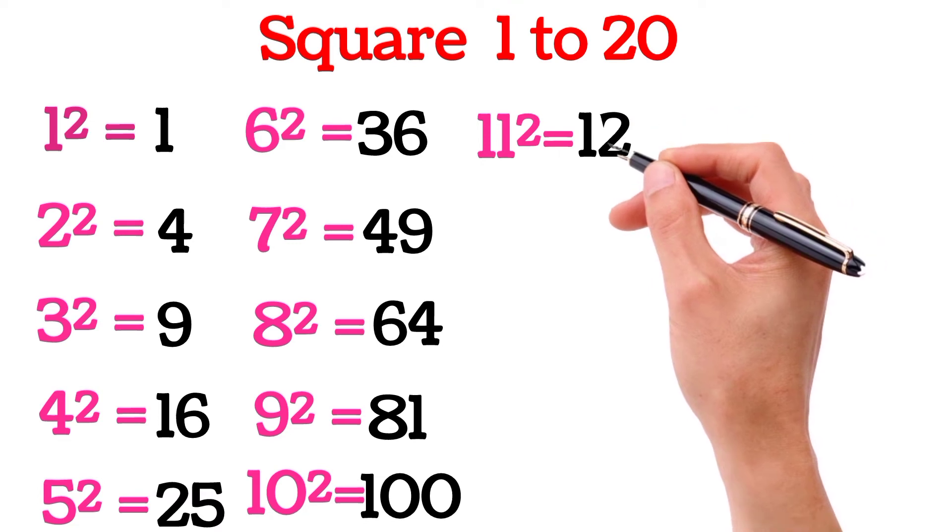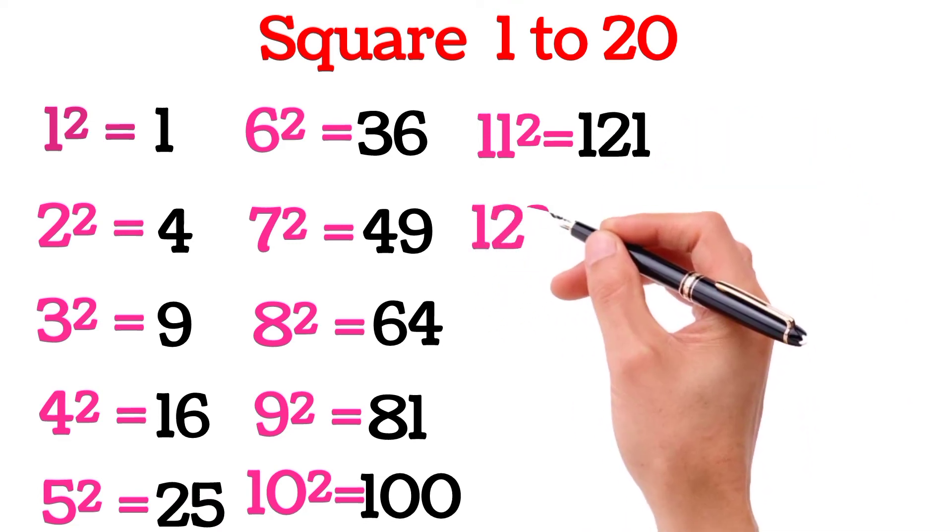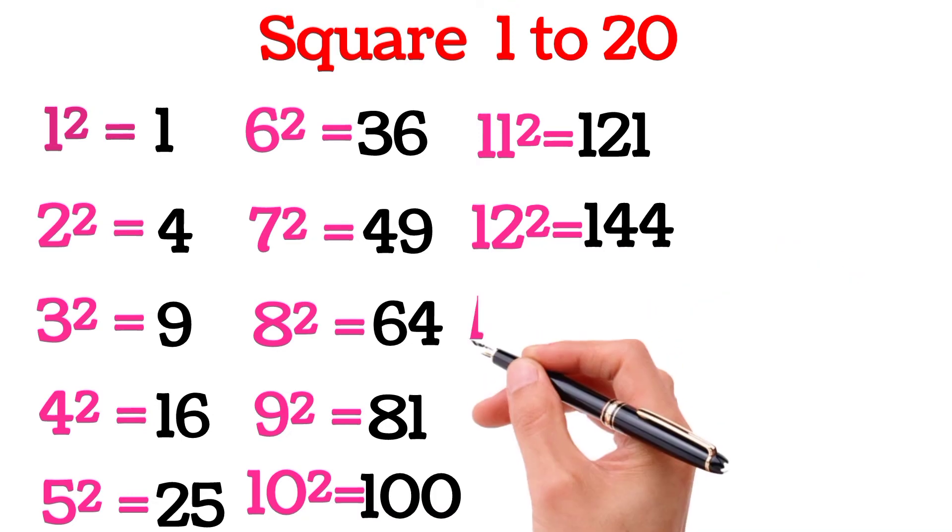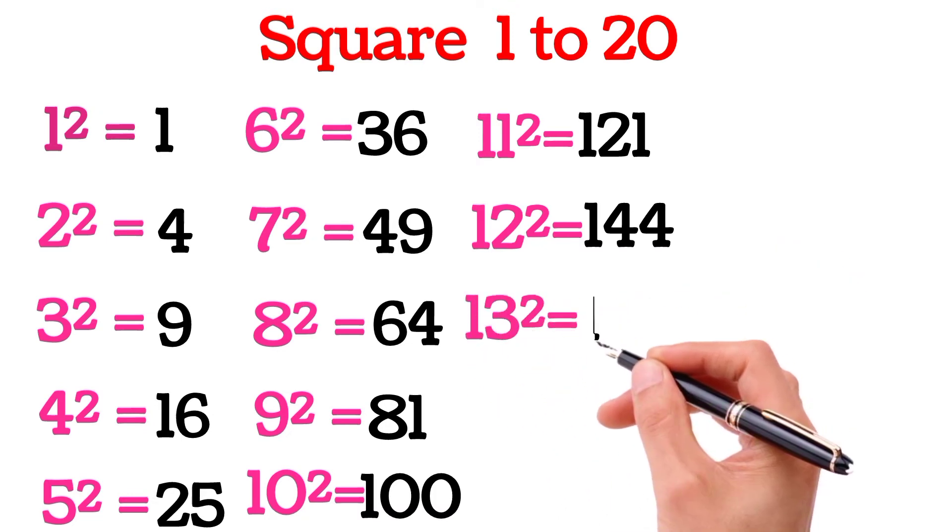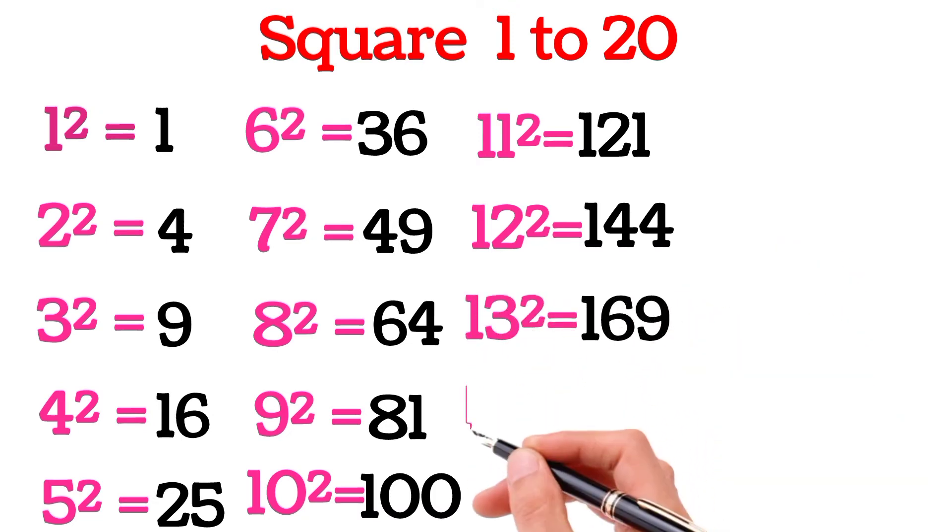11 squared equals 121. 12 squared equals 144. 13 squared equals 169.